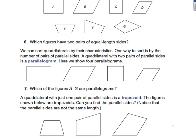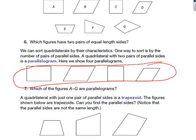We can sort quadrilaterals by their characteristics. One way to sort is by the number of pairs of parallel sides. A quadrilateral with two pairs of parallel sides is a parallelogram. Here are shown four parallelograms — these all have two pairs of parallel sides. Which of the figures A through G are parallelograms? It's A, B, C, and D.